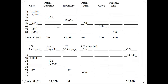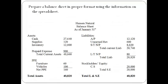Here is the spreadsheet that summarizes all of the previous transactions. The columns are totaled, and the account names and the total amounts are reported on the balance sheet in proper format. Only the account names and the total amount from the spreadsheet are reported on the balance sheet.